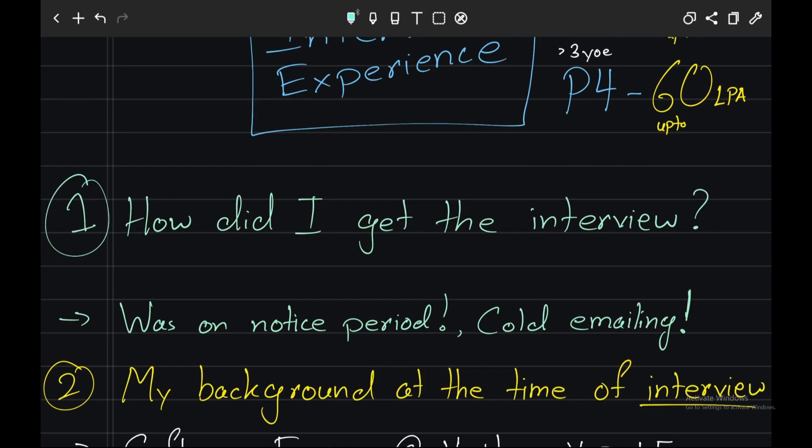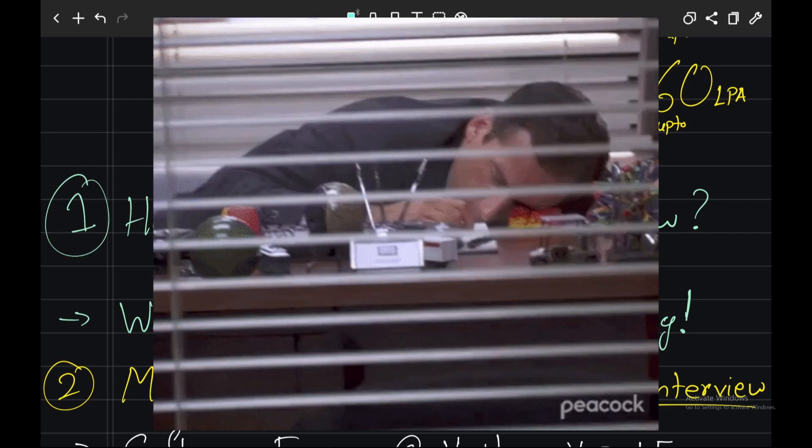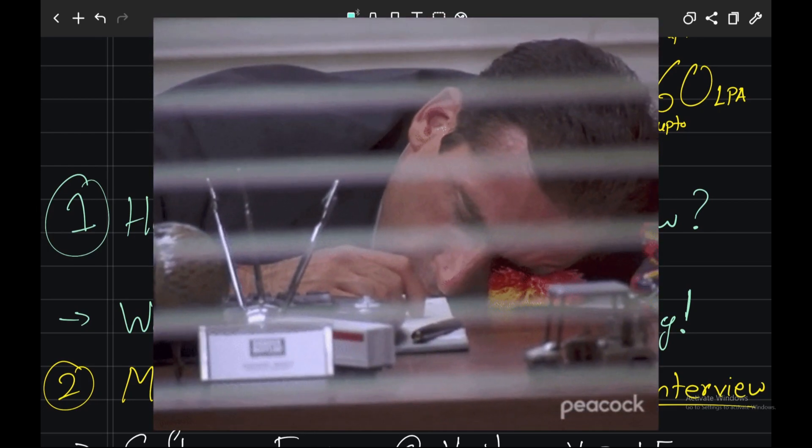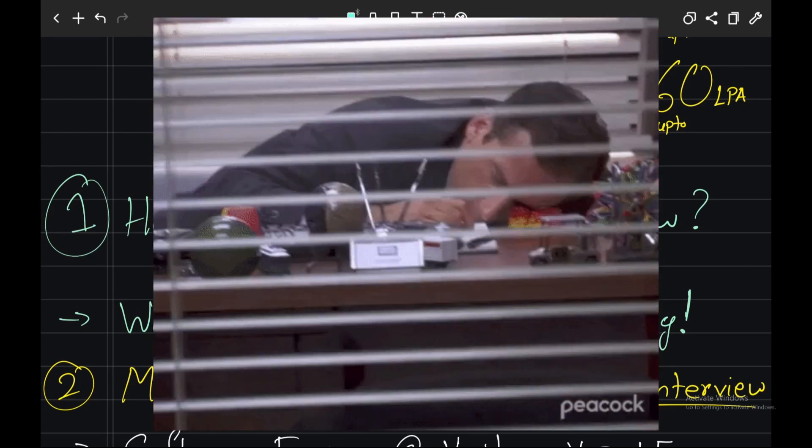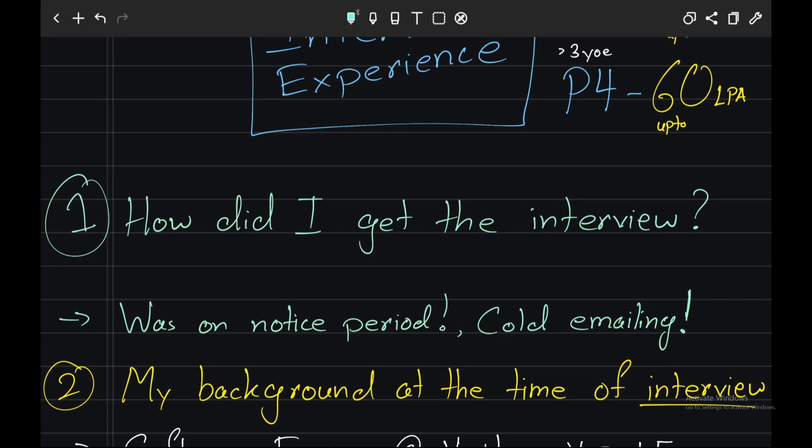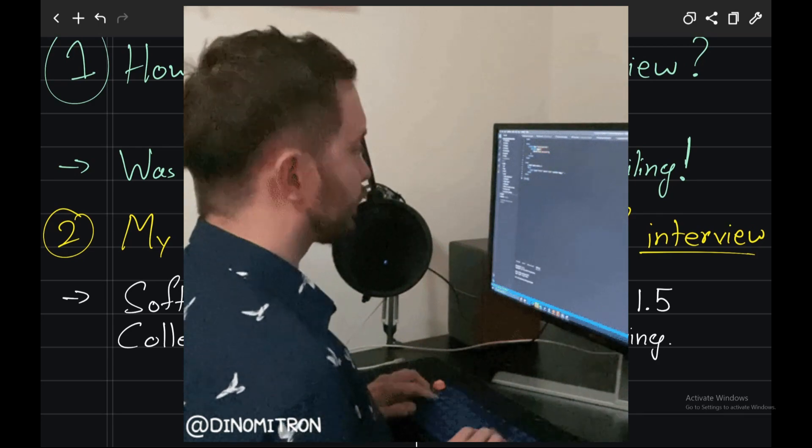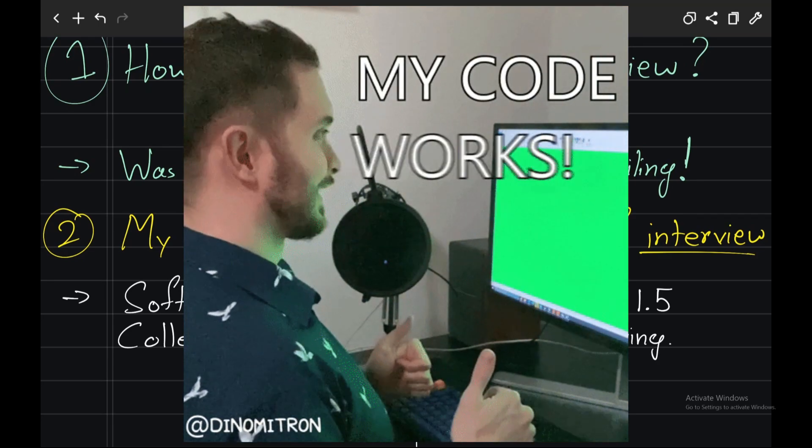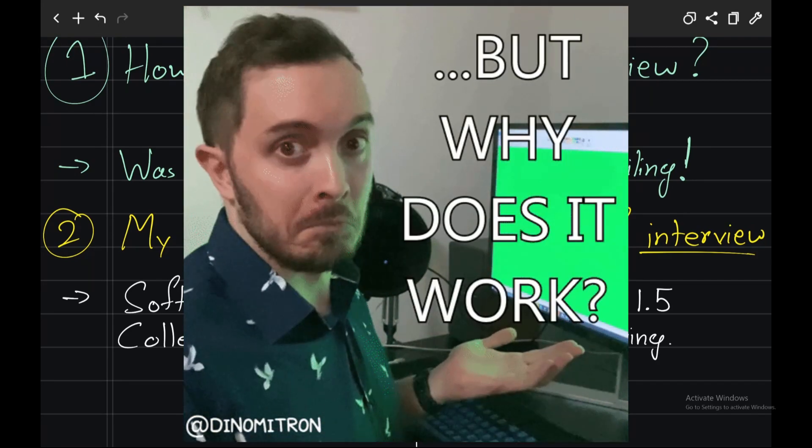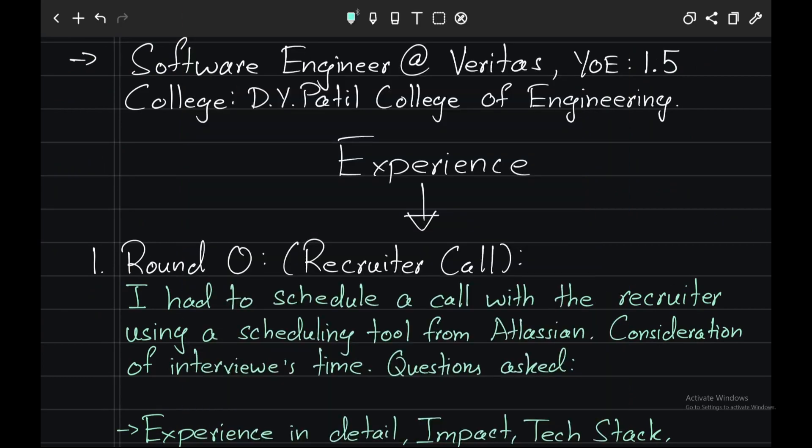So let's talk about how did I get this interview. While I was on notice period with my previous company, I tried to cold email a couple of recruiters and Atlassian was one of them. So I got an email reply back from the Atlassian recruiter and that was how I got my interview. My background at the time of the interview was I was a software engineer at Veritas with 1.5 years of experience and I was from D.Y. Patil College of Engineering.